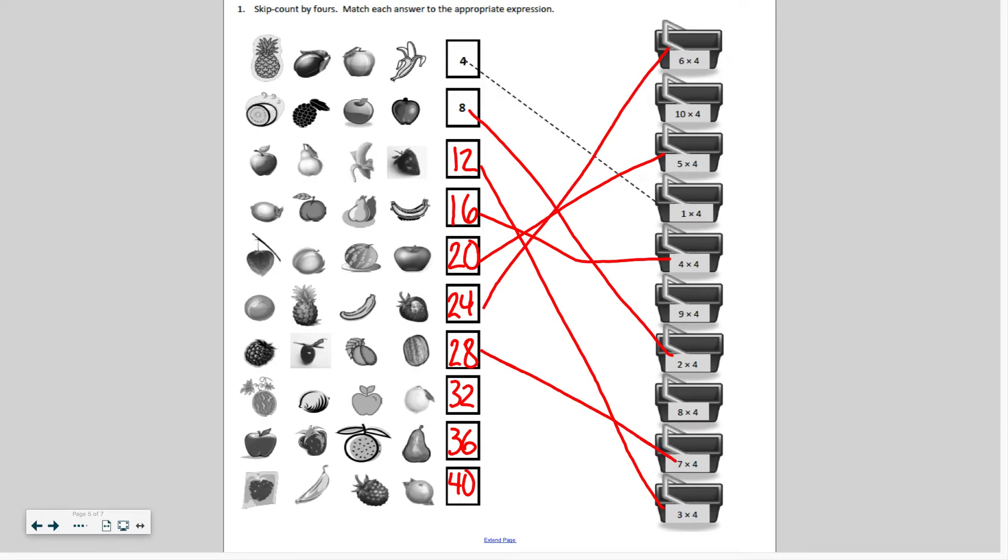Twenty-eight would be seven times four. Thirty-two is eight times four. Thirty-six is nine times four. And forty is ten times four.